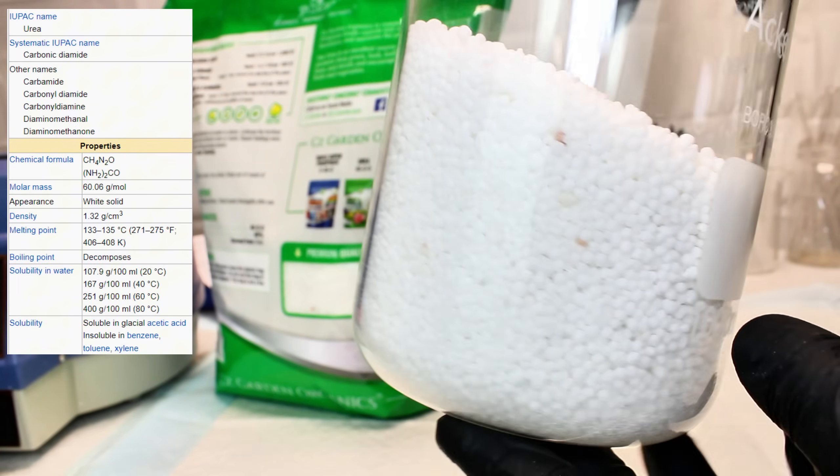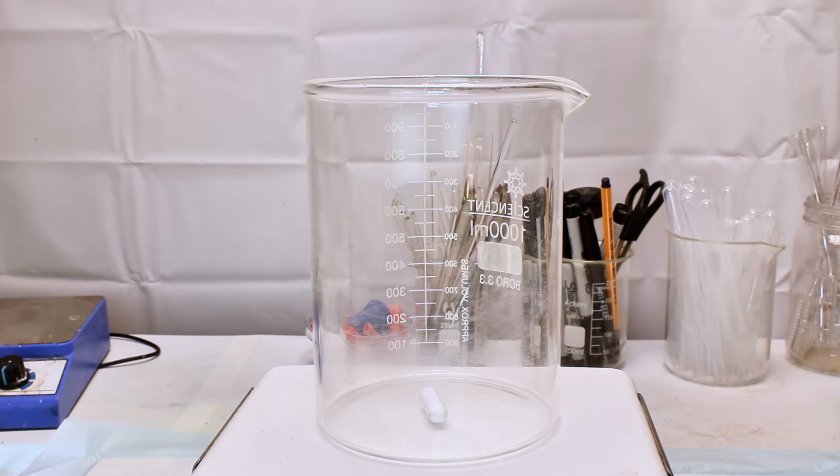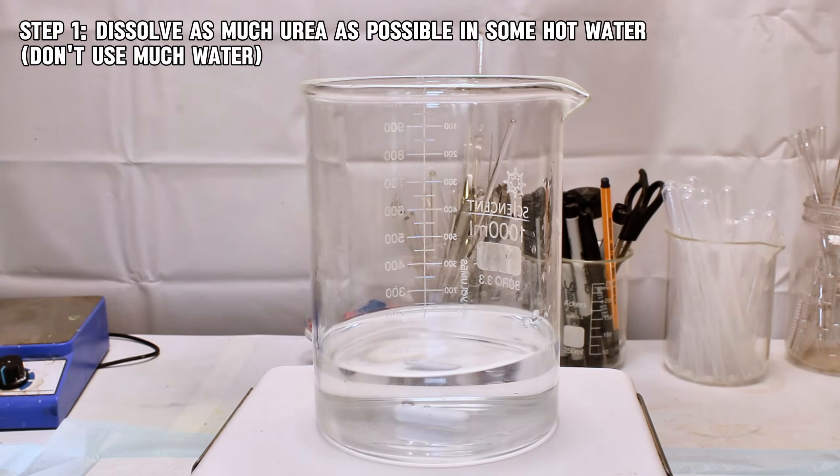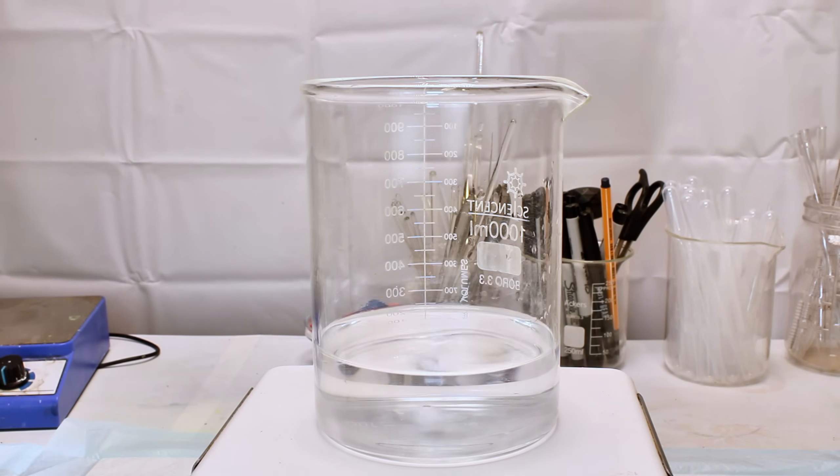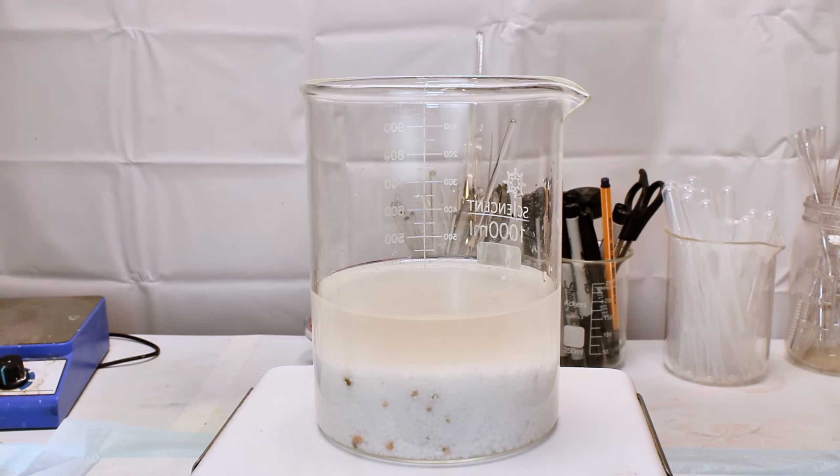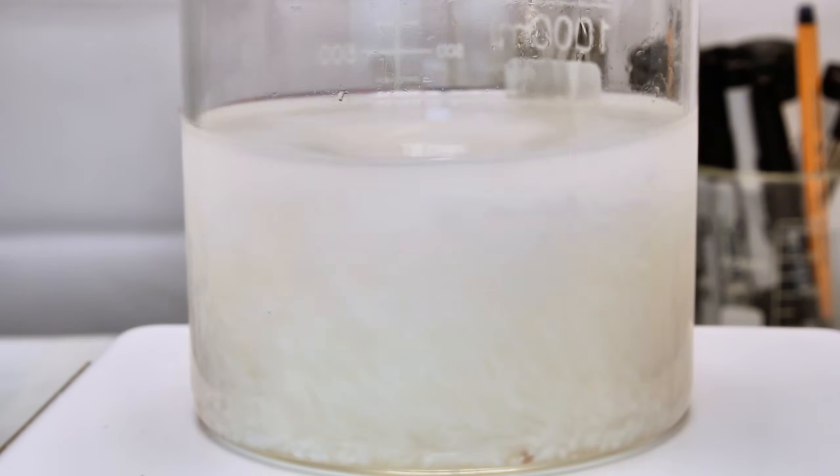To this end, the first step is to once again dissolve the urea in water, but this time I'll be dissolving as much as I possibly can in a fixed volume of water, which in this case is about 250 milliliters. To do this, I simply dump in a bunch of urea and heat it under constant stirring until it all completely dissolves.